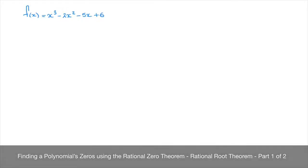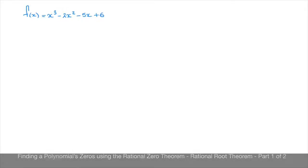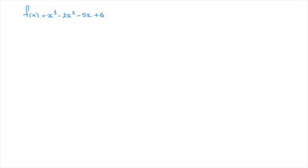In this tutorial, we work through a couple of examples in which we use the rational root theorem, or rational zero theorem, to find all of the zeros of a polynomial. The first example we're going to look at is the one we see here. We're given a polynomial function f of x, which equals x cubed minus 2x squared minus 5x plus 6, and we're going to work our way towards finding all of this polynomial's roots, or zeros.